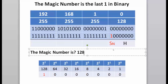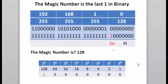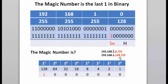The magic number tells us where to find the networks — it tells us the networks will go up by 128. So the first network, which is always 0, is 192.168.1.0 slash 25, and from there the networks go up by 128, making the next network 192.168.1.128.